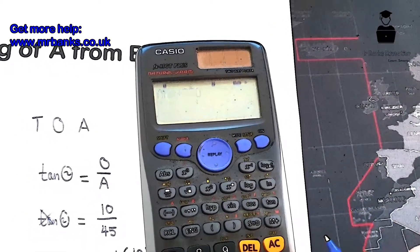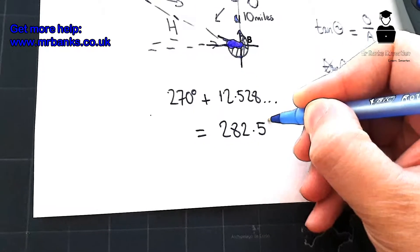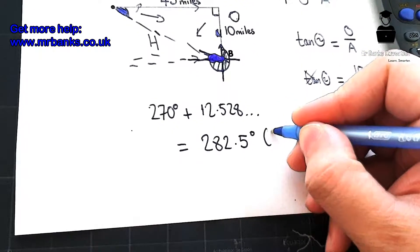And then we'll get our final answer: 282.5. So 282 point 5 degrees, and we'll just round that to one decimal place.